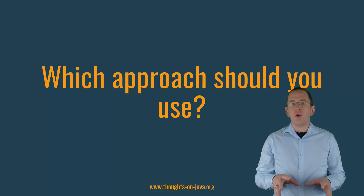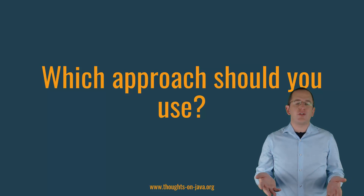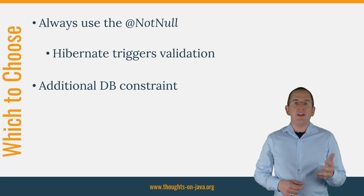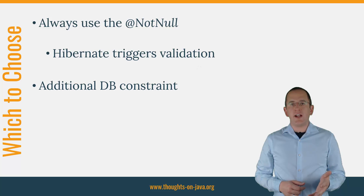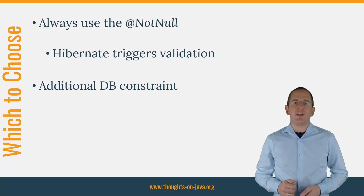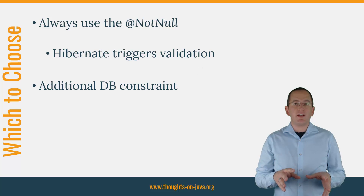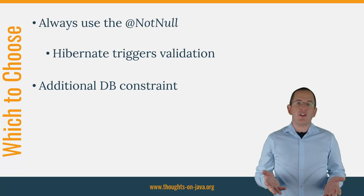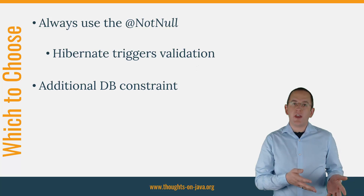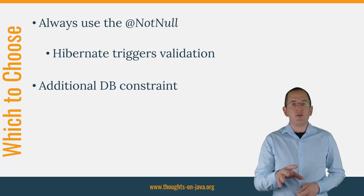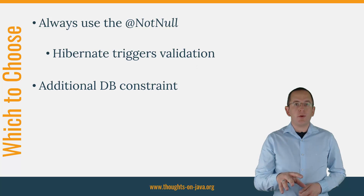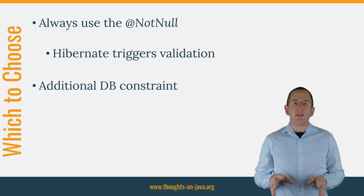So, after talking about all these differences, which approach should you use? I hope the answer has become apparent after watching this video. You should always use the NotNull annotation, which is defined by the BeanValidation specification. It configures a validation step that gets performed before Hibernate executes the SQL statement. It might look like JPA's Column annotation achieves the same result, but that's only the case if Hibernate generates the table definition and adds the NotNull constraint. Database constraints are an important tool to ensure data consistency, but they don't replace the validation in your business code.